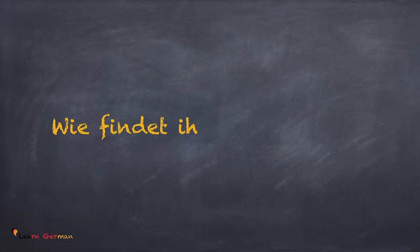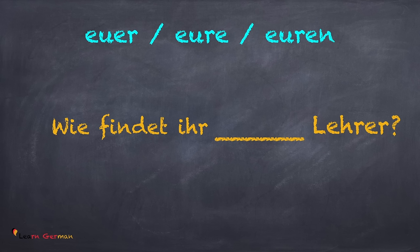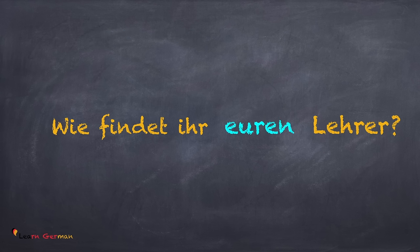Coming to the next sentence, the three options are euer, eure, or euren. The correct answer is: Wie findet ihr euren Lehrer? Lehrer is masculine, so we use the accusative form of euer, that is euren.